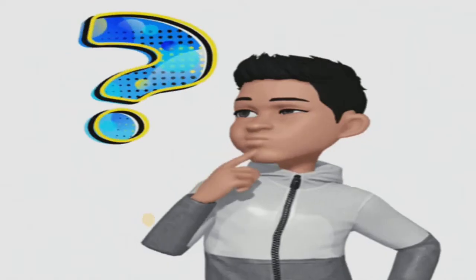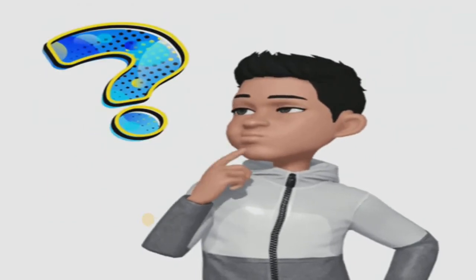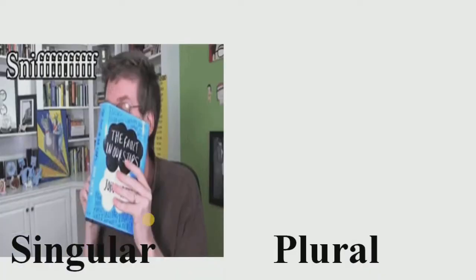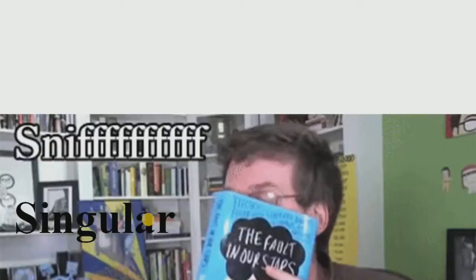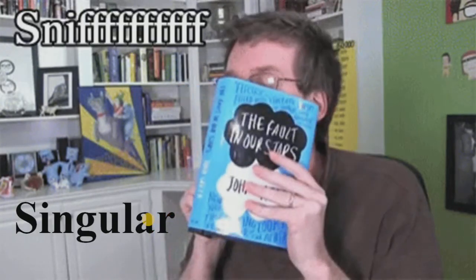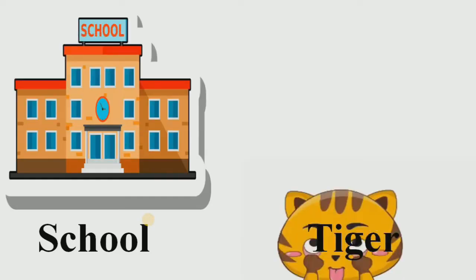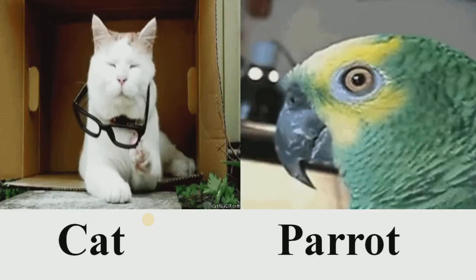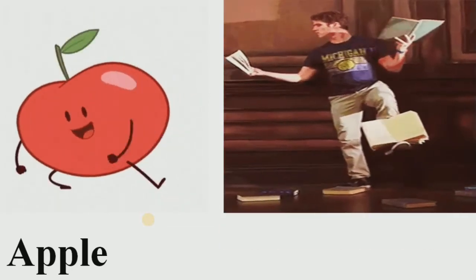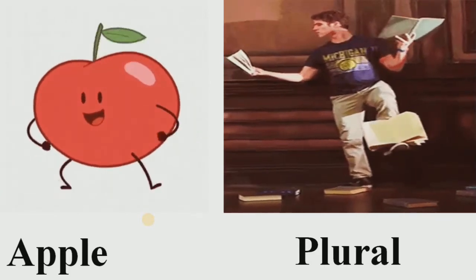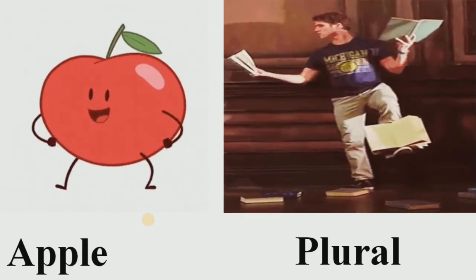Now let's come to the next exercise: Singular and Plural. In singular, we talk about only one object — for example, school, tiger, cat, parrot, apple, etc. On the other hand, when we talk about more than one object, they are known as plural. In plural, we always refer to more than one object.